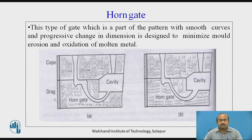Horn gate — you can see the cross-section of the horn gate here. This type of gate, which is part of the pattern with smooth curves and progressive change in dimension, is designed to minimize mold erosion and oxidation of molten metal.